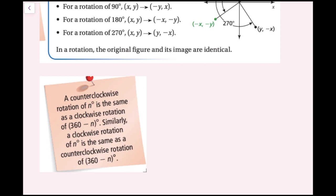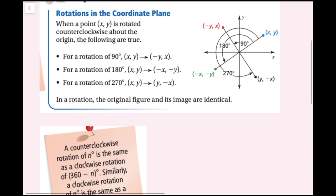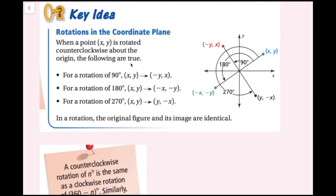Similarly, a clockwise rotation of n degrees is the same as a counterclockwise rotation of 360 − n degrees. For our purposes, a 90° rotation in one direction equals 270° in the opposite direction, and 180° is the same regardless of direction. You can also make all rotations graphically — that works too.